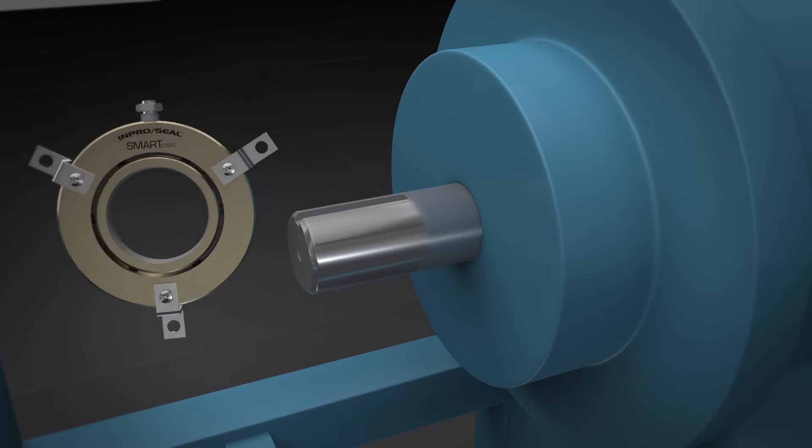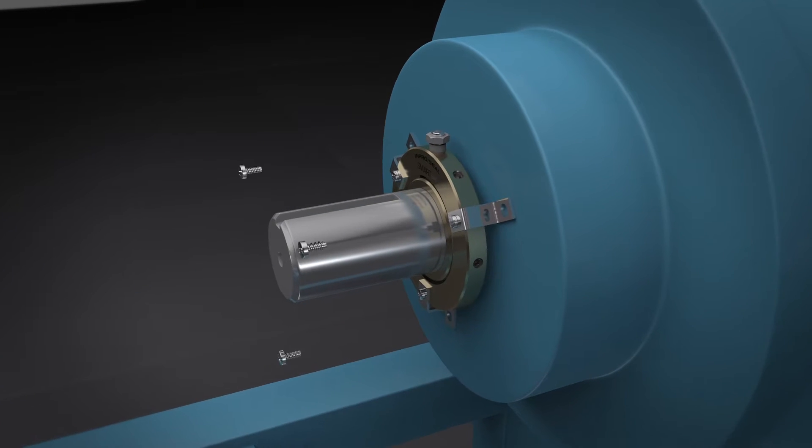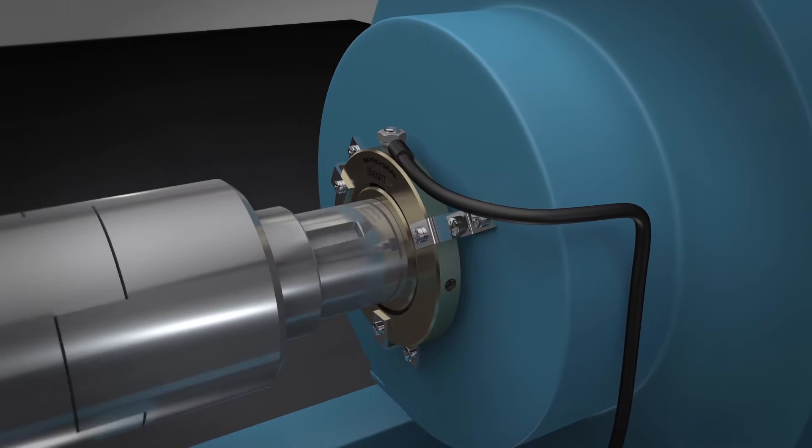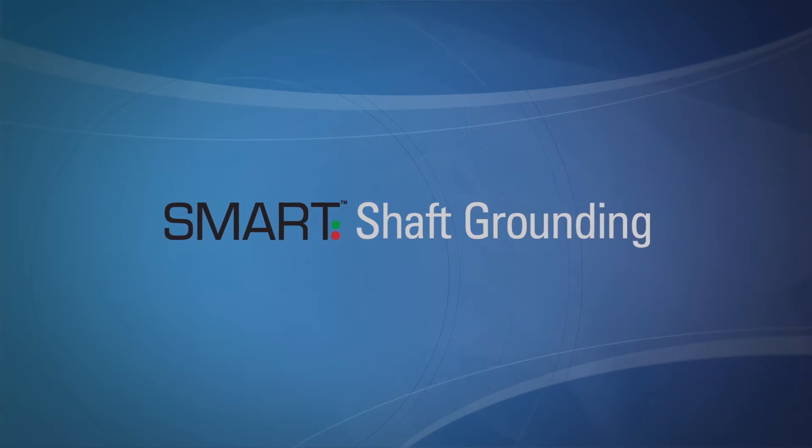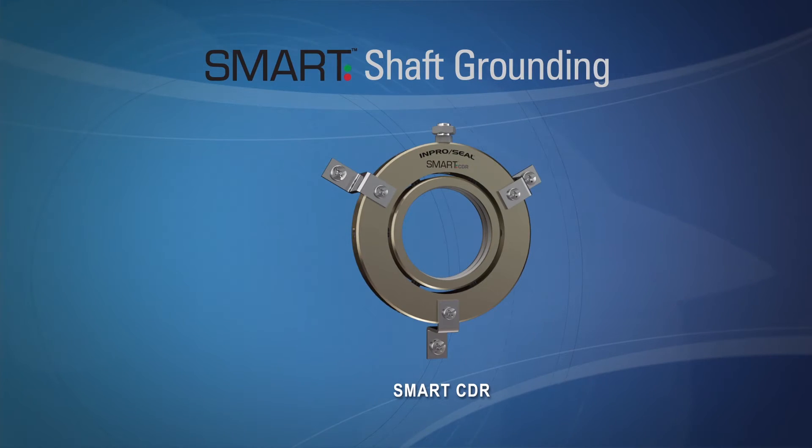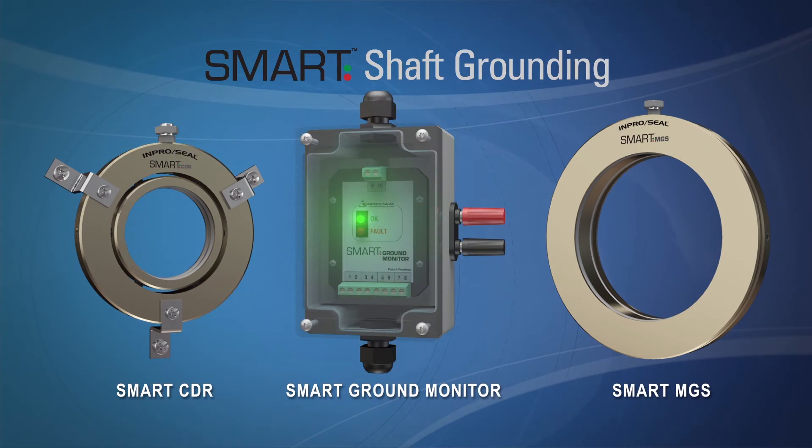InProSeal Smart Shaft Grounding combines proven technology with innovative new features to protect bearings against these stray shaft currents and increase equipment reliability. Smart Shaft Grounding products include the Smart CDR, Smart MGS, and Smart Ground Monitor.